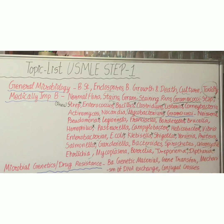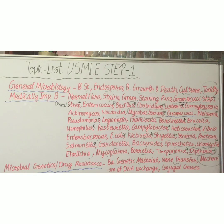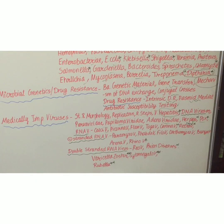Additional bacteria include Chlamydia, Rickettsia, Mycoplasma, Borrelia, Treponema, and diphtheria, which is important. In microbial genetics and drug resistance, subtopics cover bacterial genetic material, gene transfer mechanisms, DNA exchange conjugation, intrinsic and plasmid-mediated drug resistance, and antibiotic susceptibility testing. For viruses: structure, morphology, replication steps, and hepatitis virus. DNA viruses include Parvovirus, Papillomavirus, Adenovirus, Herpesvirus, and Poxvirus.